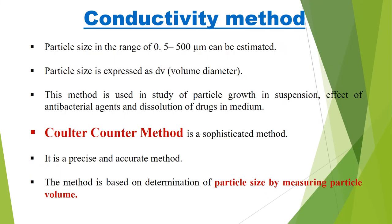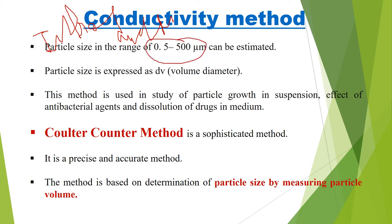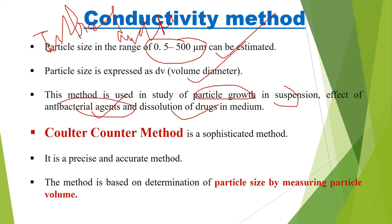What is the conductivity method and how do we determine particle size by it? The conductivity method can be used if the particle size is 0.5 to 500 micrometers. This method is used in the study of particle growth in suspension, the effect of antibacterial agents, and the dissolution of drugs in a medium.